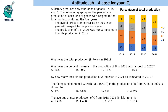In each year the percentages add up to 100%. For example, 60 plus 40 is 100, and 45 plus 55 is 100. We are given that the overall production increased by 20% each year with respect to the previous year. We are not given the total production in any year — just that it increased by 20% every year. Another key piece of information: production of C in 2021 was 40,800 tons more than the production of C in 2019.